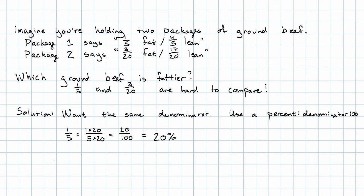What about three-twentieths? Let's multiply the numerator and denominator both by five. And we'll have fifteen hundredths, so fifteen percent.